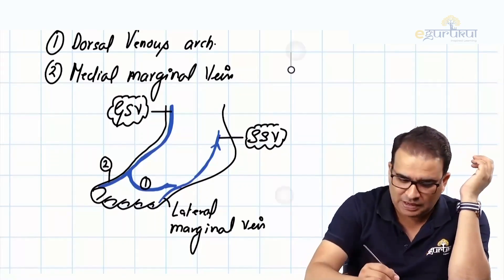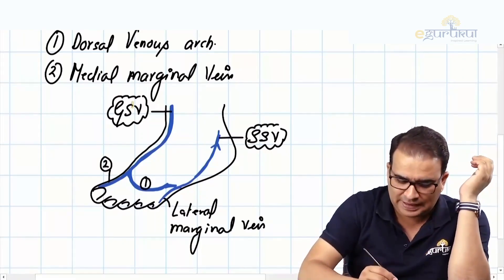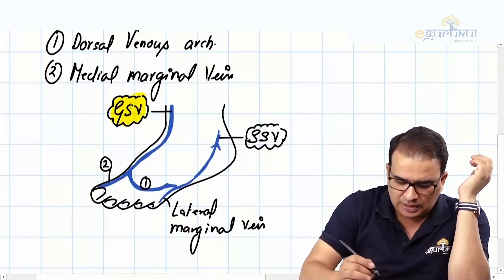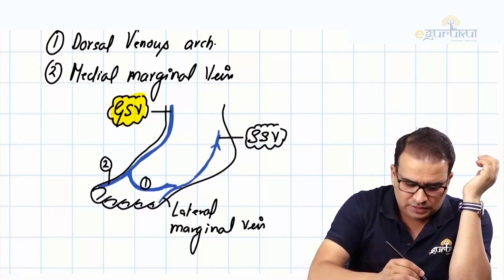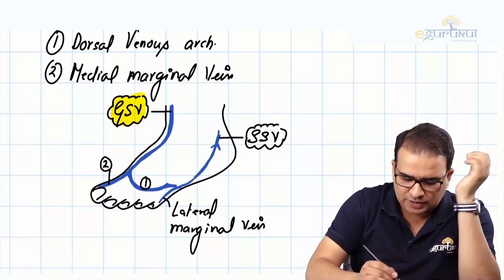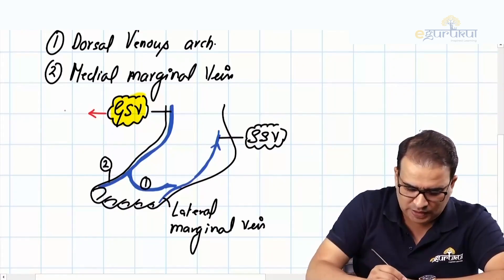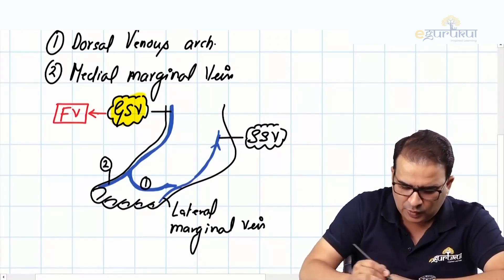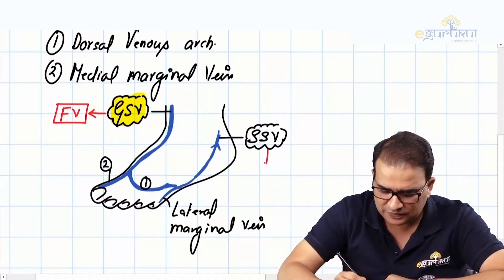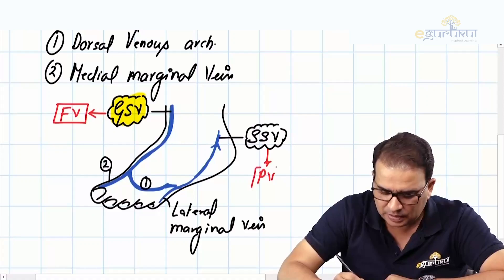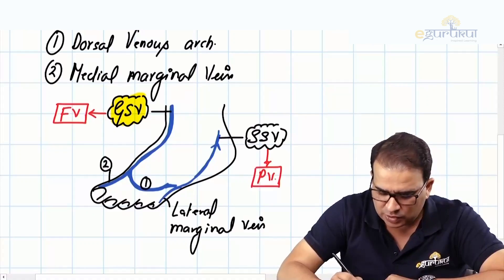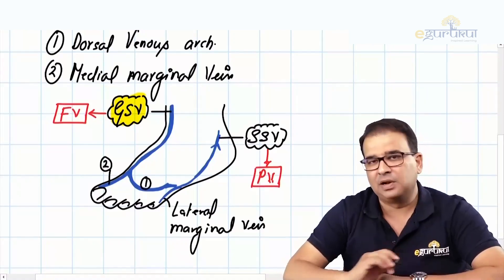Our main concern here is the great saphenous vein. The great saphenous vein is a tributary of the femoral vein — it drains into the femoral vein. The small saphenous vein, on the other hand, drains into the popliteal vein.